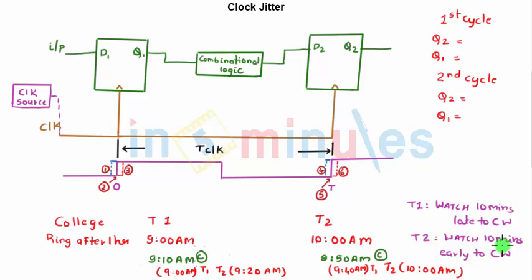Now we are all set to understand jitter. Presume that one day in the college the bell is not ringing or the bell has malfunctioned. In this case both the teachers will trust their respective watches to enter the classroom. Let's understand the scenario.